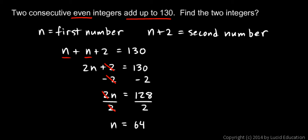So n is 64, and n plus 2, 2 more than that is the next number. So 64 and 66 are the two numbers. So that is the answer to the problem, 64 and 66.